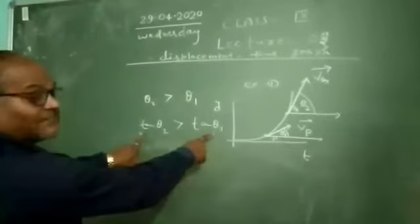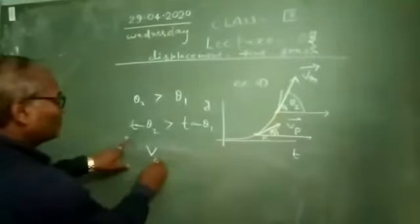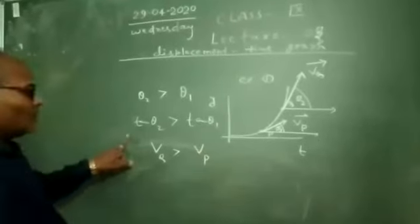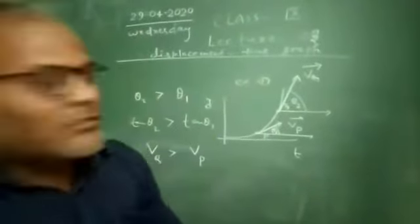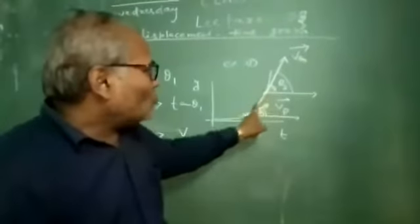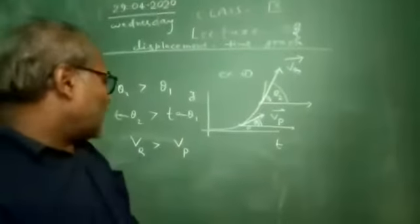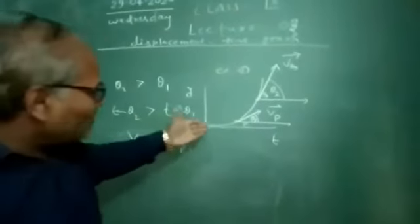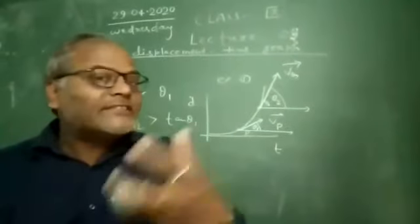We know that the magnitude of tan theta represents the velocity. Therefore, the velocity at point Q is greater than the velocity at point P. So the angle goes on increasing with time, and hence the velocity goes on increasing. This graph represents the velocity of a body going on in increasing order.